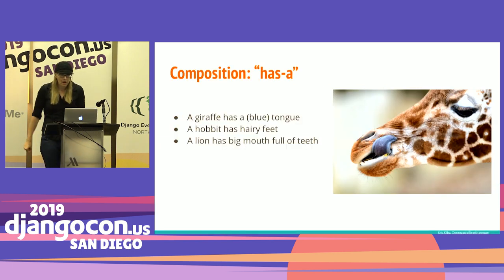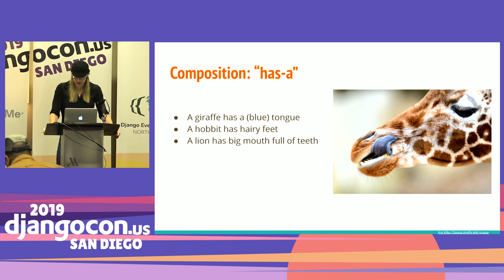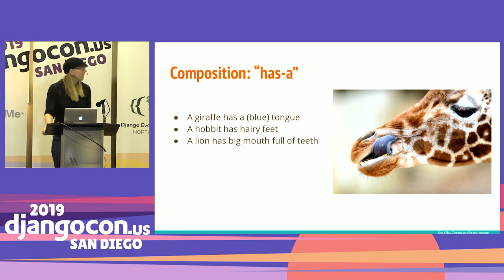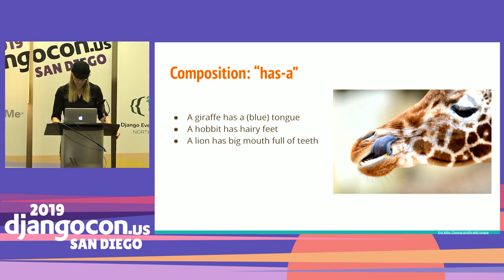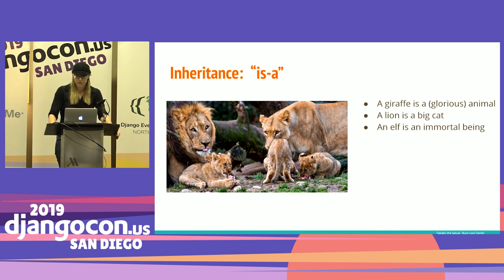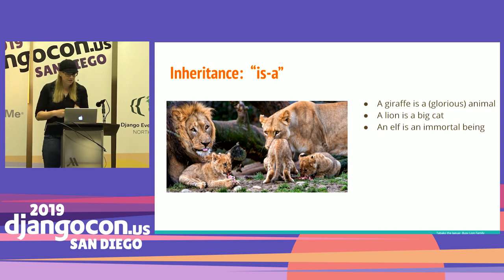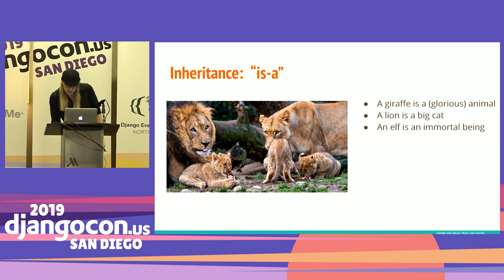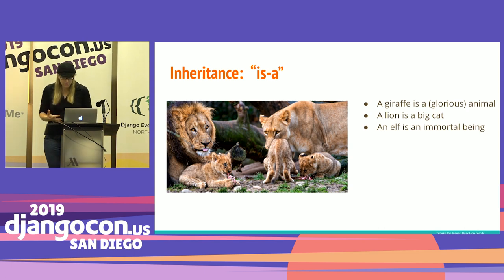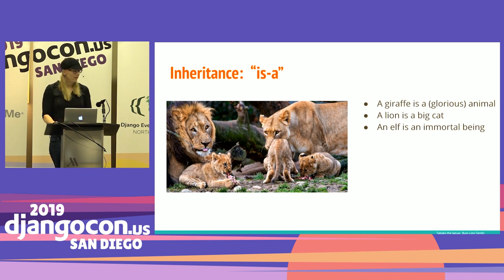So what does this mean? Composition is a mechanism to combine objects or data into more complex ones — you can think of it as a has-a relationship. For example, a giraffe has a blue tongue. Inheritance is a way of deriving a subclass from a parent or base class to create a hierarchy of shared attributes and methods. You can think of inheritance as the is-a relationship — so a giraffe is a glorious animal.